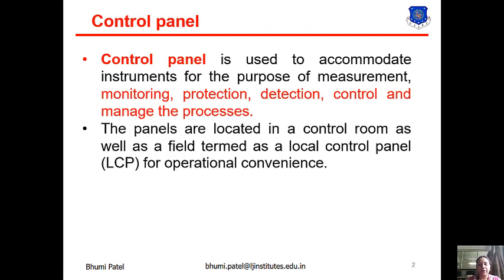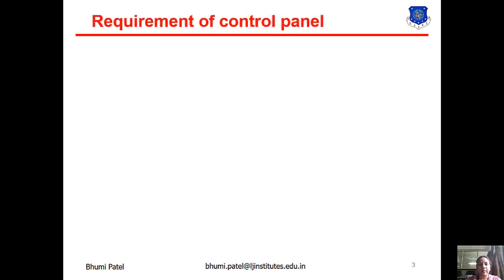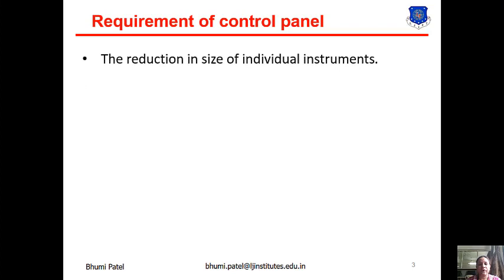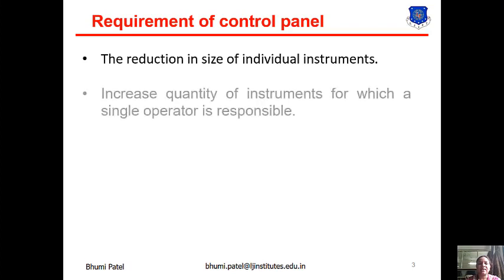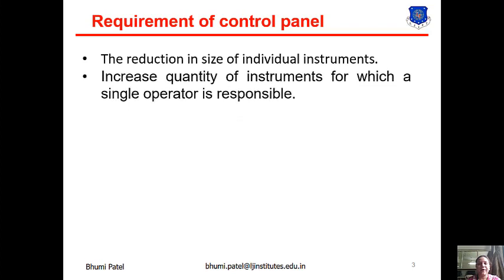Next is the requirement of the control panel. The first requirement is the reduction in size of individual instruments. In the field area, if we use more than one instrument the area size will be greater, but if we use one control panel with different instruments, the size of the individual instrument is reduced. The next requirement is the increased quantity of instruments for which a single operator is responsible, so all instruments can be operated by a single operator without requiring multiple operators.